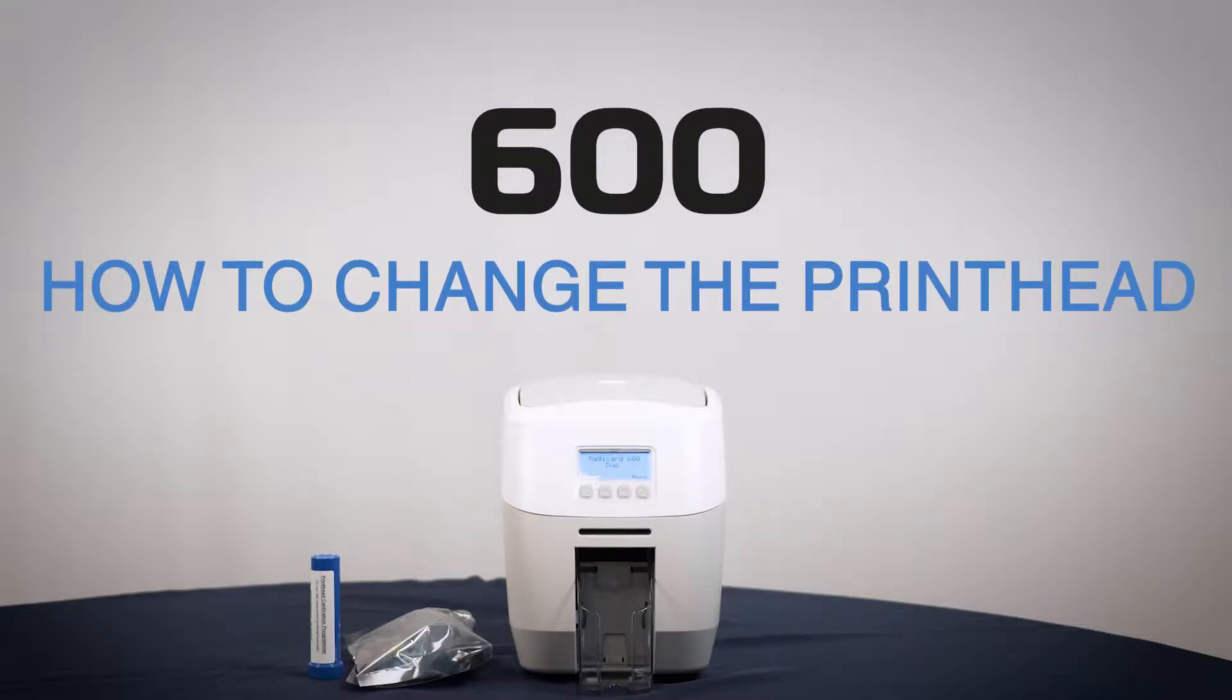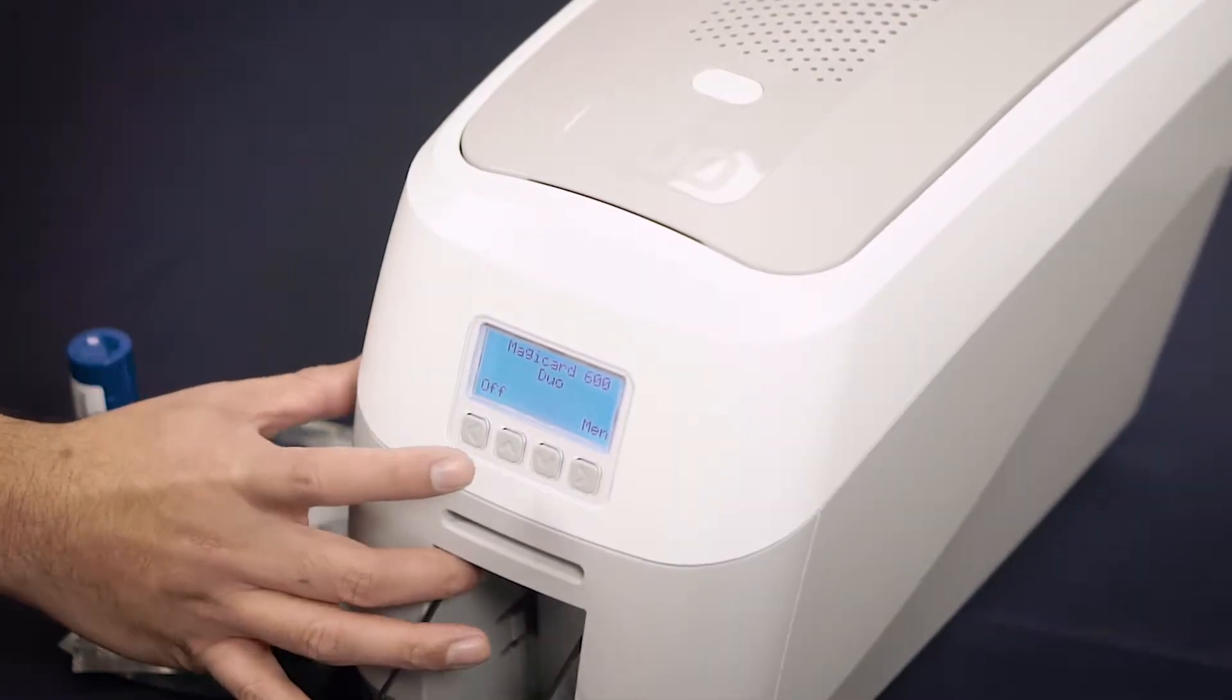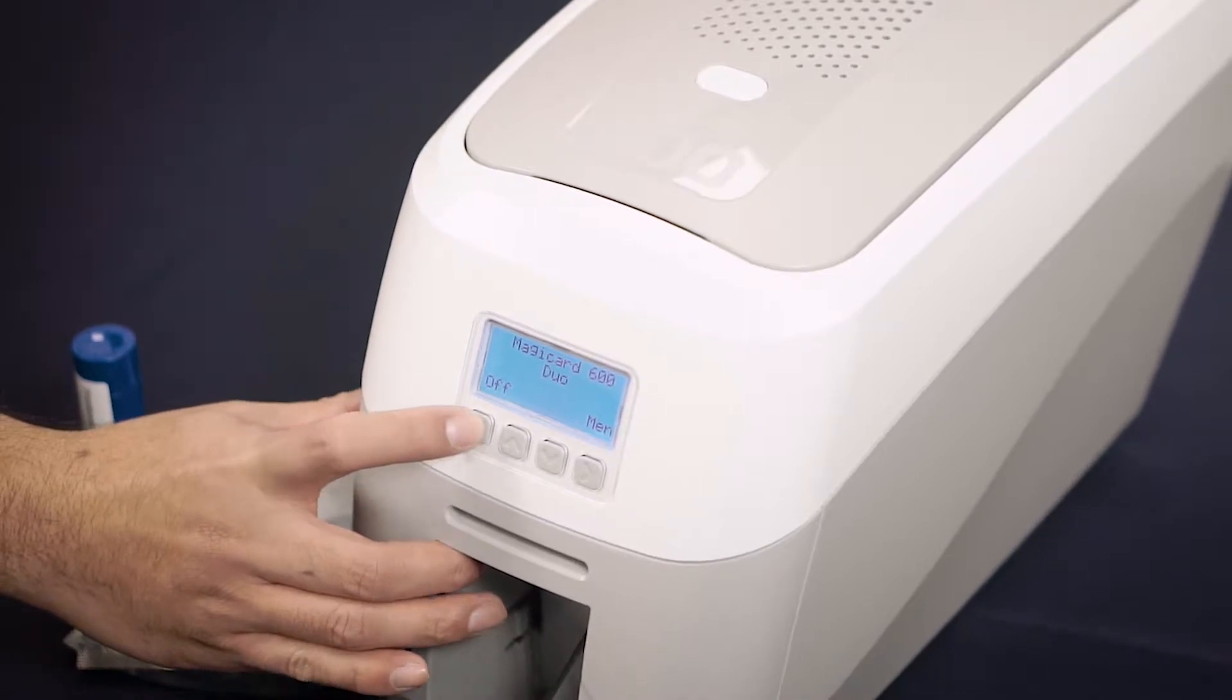This video will show you how to change the print head in your Magicard 600 printer. Firstly, power off your printer by pressing the button beneath off on the home screen.